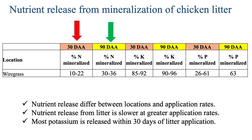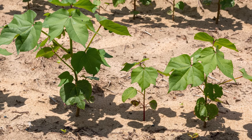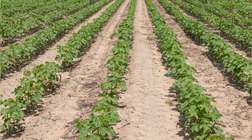We are looking at: if a producer applies two tons of chicken litter pre-plant to the cotton, how much nitrogen can they apply as a side dress application at the first square stage, and potentially prevent this excessive or prolonged vegetative stage in cotton plants and its negative consequences. We have five different nitrogen rates that we are going to apply as a side dress application at the first square stage.